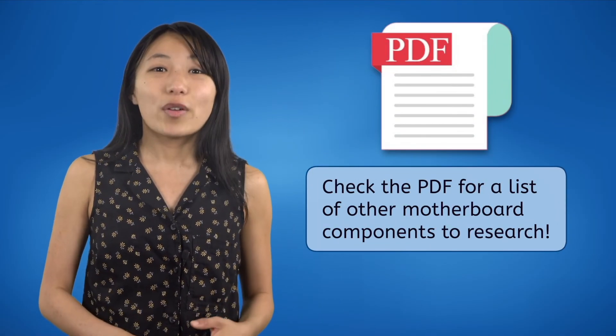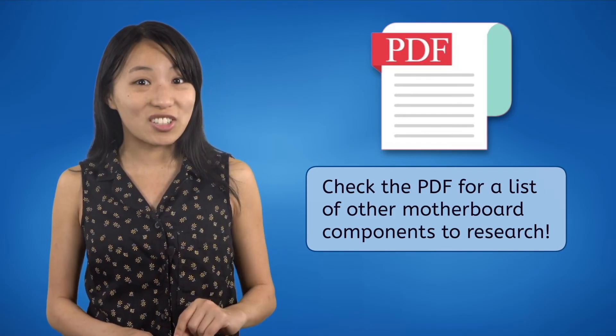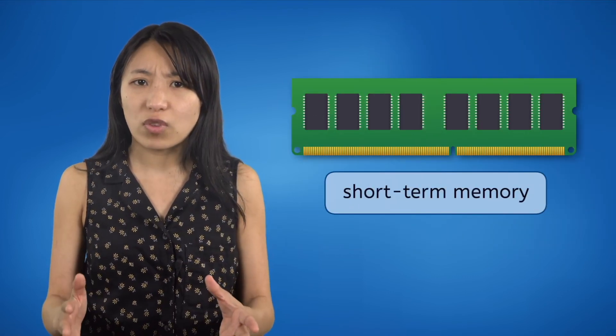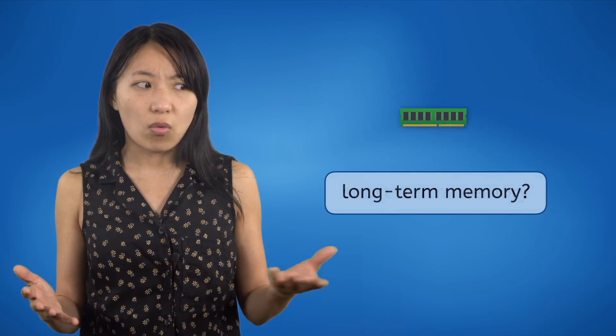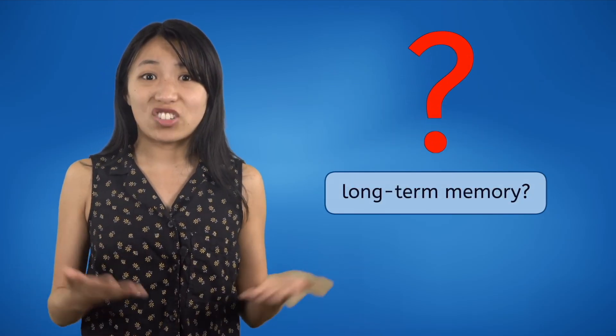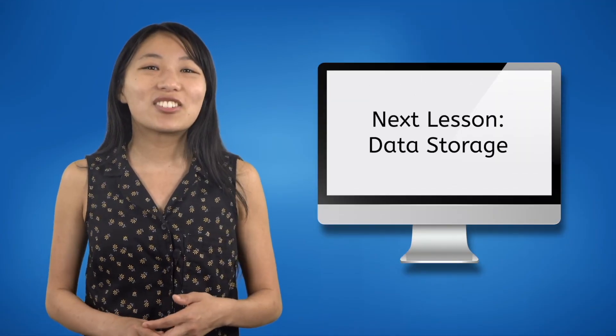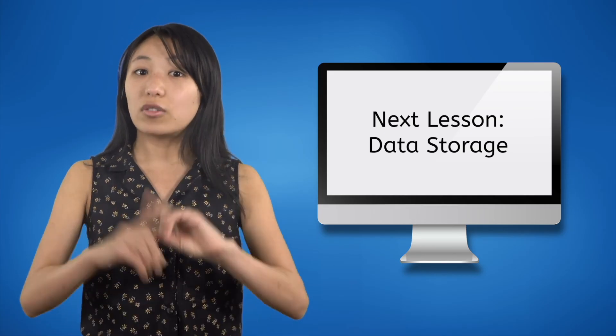The motherboard has a lot of components — and if you think we covered a lot in this video, you should see the list of components we didn't talk about. Since this course is more about using computers than building them from scratch, we won't get into every single part, but we've included a list of other motherboard components in the PDF if you'd like to research more. One thing is still missing though: if a computer's RAM is only short-term memory for calculations, where is the long-term memory so you can actually save things? In the next lesson, you'll learn about long-term data storage devices, including hard drives and flash drives. Remember — your brain is the smartest computer in the world, so keep it charged and never stop updating it! See you next time!